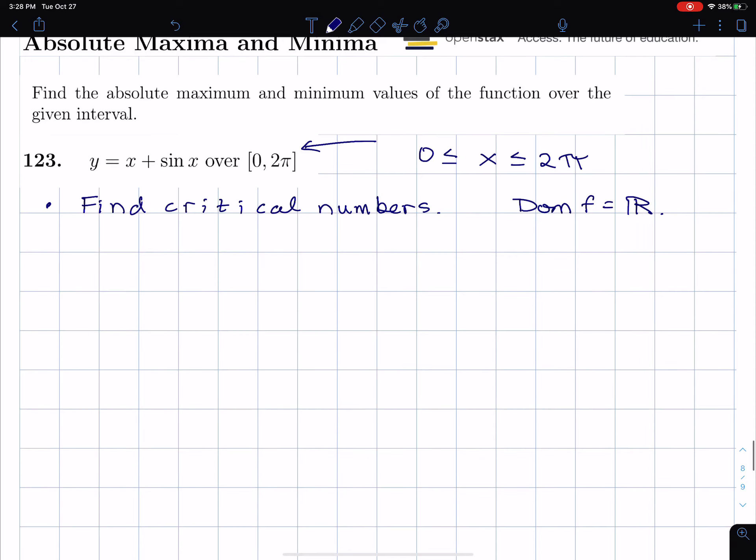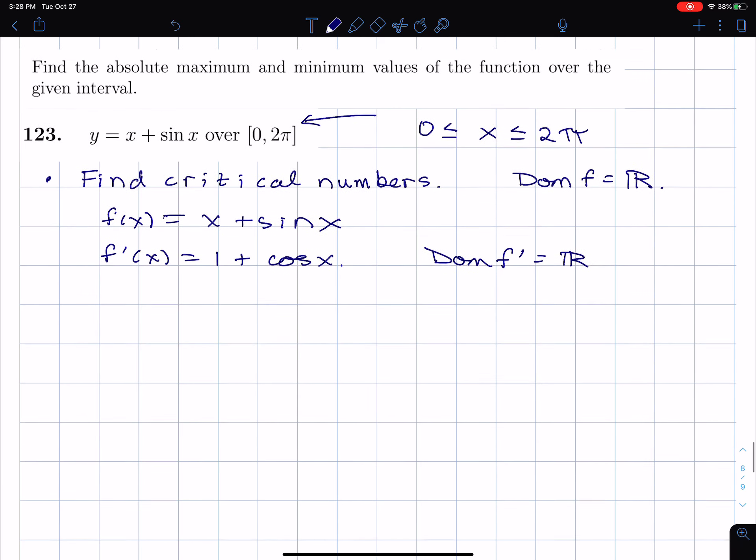So let's go ahead and find the critical numbers. I'm going to take the derivative. The derivative of x is 1, the derivative of sin x is cosine x. So the domain of f prime is also all real numbers, so there are no numbers c such that f prime of c is undefined. That's one type of critical number - it's where f prime of that number is undefined, and that number is in the domain. Critical number always has to be in the domain.